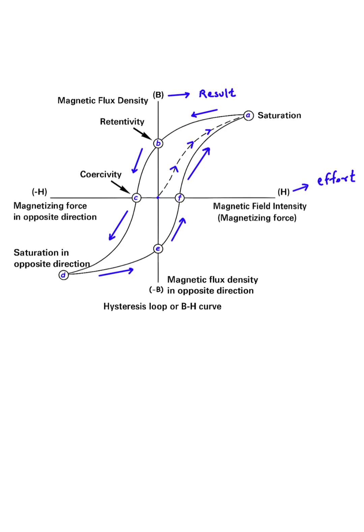Eventually, we reach point A, which is called saturation. At this point, the material is as magnetic as it can possibly get. Even if we apply more effort, we won't get any more magnetic result.